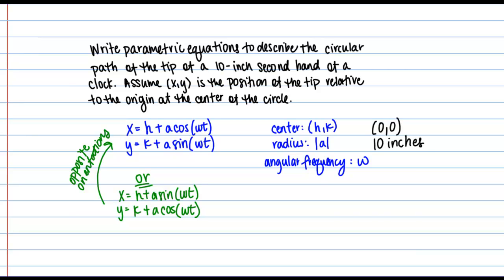Next let's think about the angular frequency — the rate at which the circle is traced out. Angular frequency is measured in radians per unit time. Our second hand moves one full circle, which is 2 pi radians, in 60 seconds. So the angular frequency is 2 pi divided by 60, or pi over 30, with units of inverse seconds.